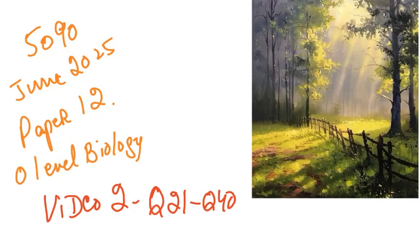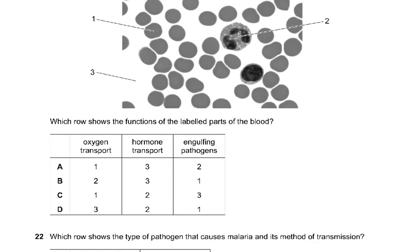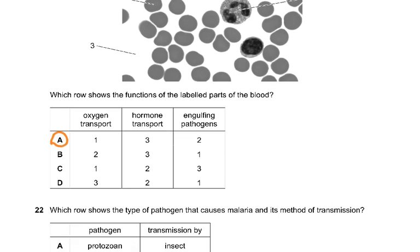Bismillahirrahmanirrahim — second video on June 2025 Paper 1-2. Question 21: the photomicrograph shows a sample of blood vessels viewed through a light microscope. One is red blood cells, two is a neutrophil or white blood cell, and three is the plasma. The answer is A because: one — red blood cells transport oxygen; three — plasma transports hormones; two — engulfing pathogens.